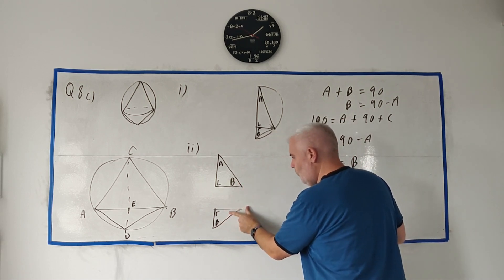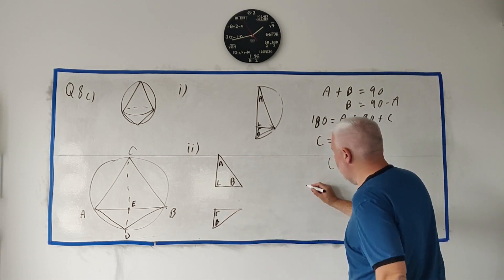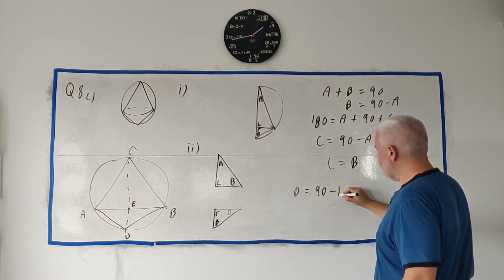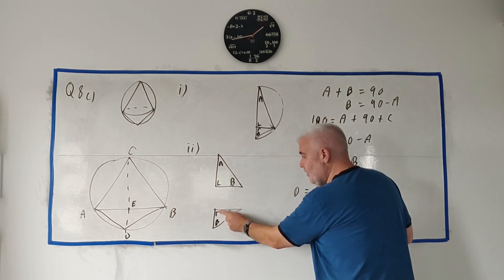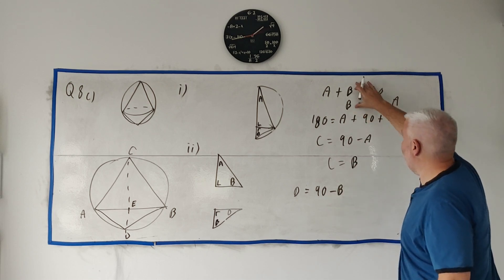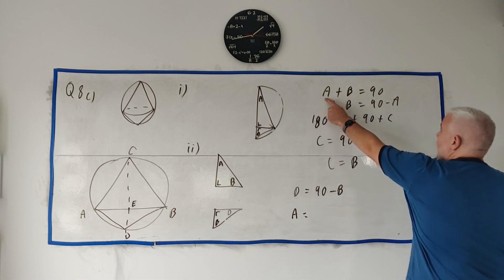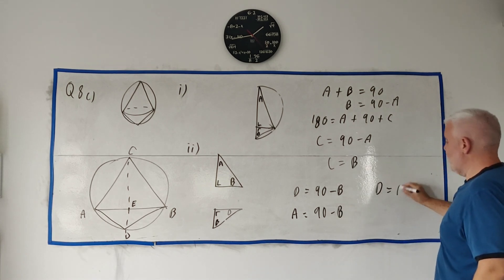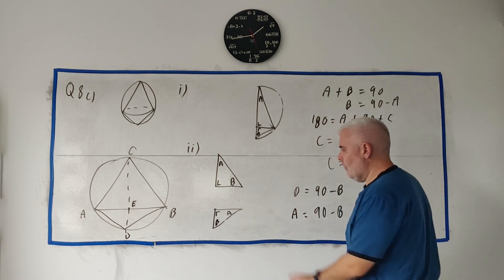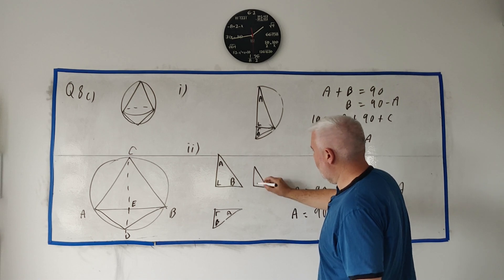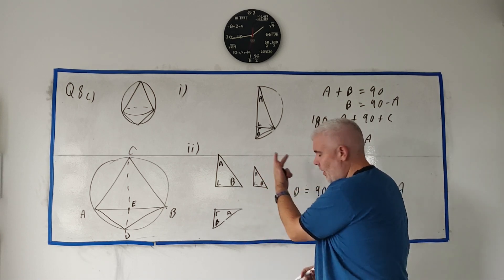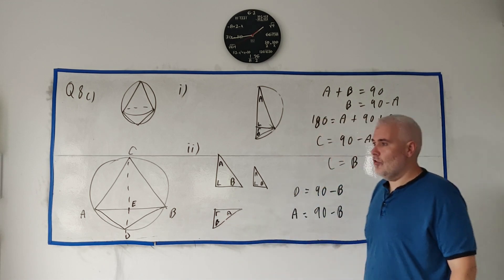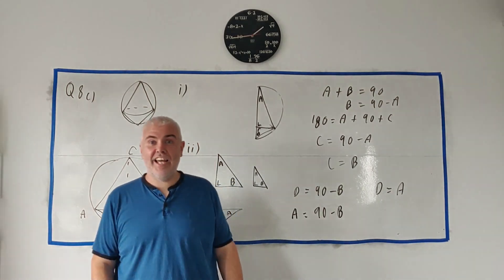Looking at triangle BED, let's call the remaining angle D. The angles in that triangle sum to 180°, so D = 90° − B. But B = 90° − A, so D = A. All three angles match between the two triangles: both have a right angle, angle A appears in one where angle D = A appears in the other, and angle B is shared. Therefore triangle BCE is similar to triangle BED.